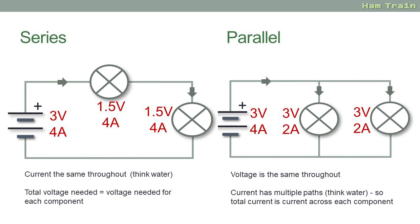On the right, a parallel circuit, and here the voltage is the same throughout. Like water, the current has multiple paths, so the total current is the current that's flowing across each of the components. In this example a 3 volt battery, 3 volts going through each of the lamps. Total current for the circuit is 4 amps, and that's 2 amps through the first lamp and 2 amps through the second lamp. Both of these diagrams of course assume that both lamps are identical.